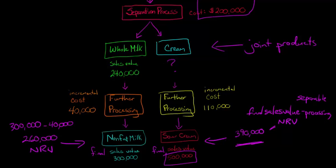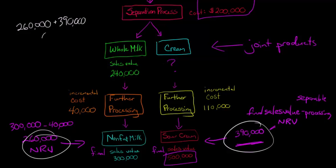Now here's what we can do. Similar to the relative sales value, now what we can do is we can add up these NRVs. So we've got $260,000 and $390,000. So if we add $260,000 plus $390,000, that gives us $650,000 total. This is our total NRV.